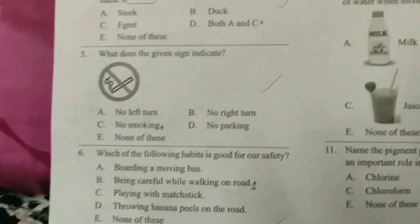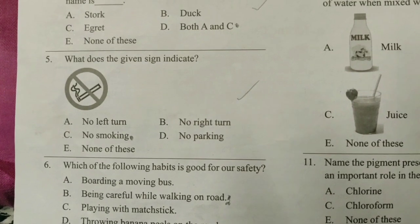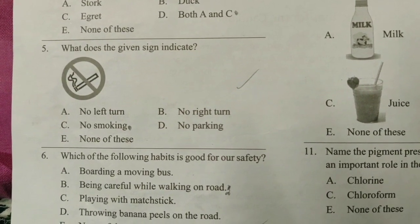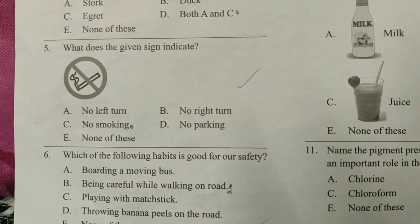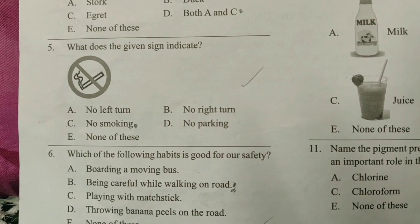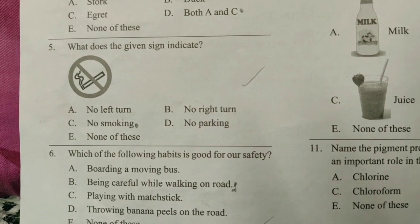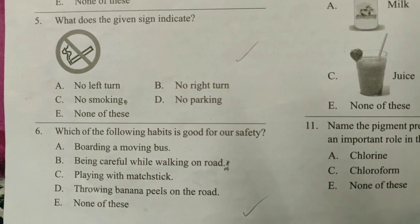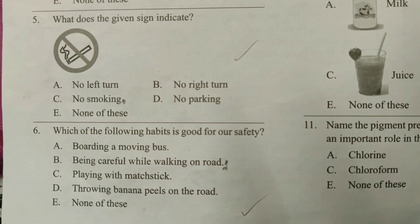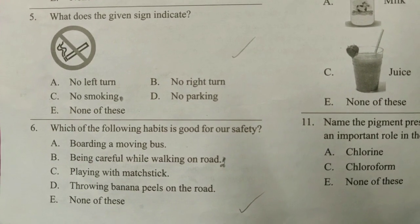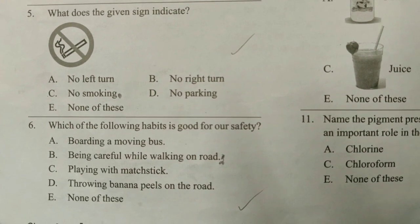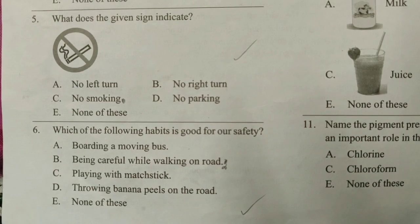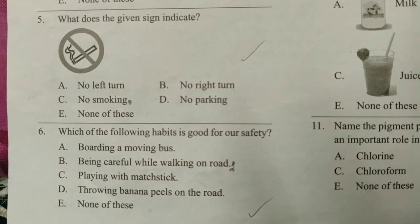Question 5: What does the given sign indicate? The answer is C, and it is from Chapter 10. Question 6: Which of the following habits is good for our safety? The answer is B, and it is from Chapter 10.